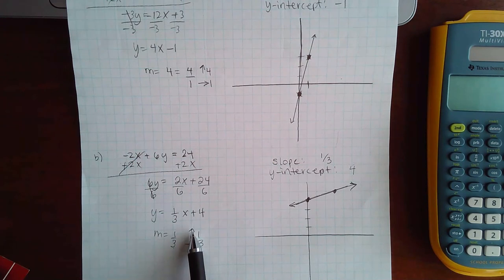The only thing that changes if your slope happens to be negative is that instead of going up you would go down. However, you always go to the right.